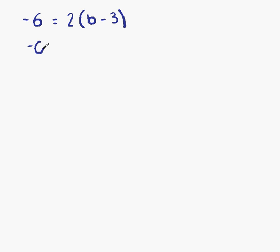So we have minus 6 equals. We have a 2 sitting outside this bracket. That means it's timesing everything inside the bracket. 2 times b is 2b. 2 times minus 3 is minus 6.